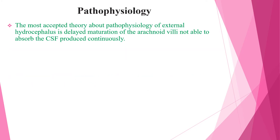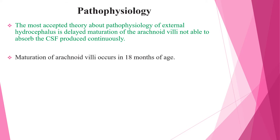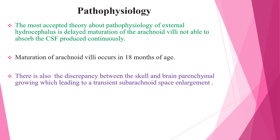The most accepted theory about pathophysiology of external hydrocephalus is delayed maturation of the arachnoid villi, which are not able to absorb the CSF produced continuously. Normally, maturation of arachnoid villi occurs at 18 months of age. There is also discrepancy between skull and brain parenchymal growing, which leads to transient subarachnoid space enlargement.